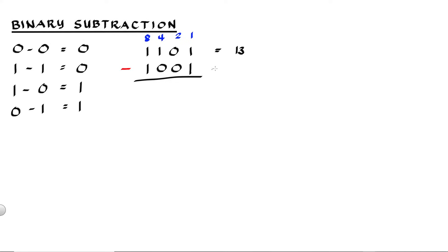1001 is the binary equivalent of 9 — we have 8 plus 1 is equal to 9. And 13 minus 9, we already know that the difference is 4 and we should come up with the same answer. 1 minus 1 is 0, 0 minus 0 is 0, 1 minus 0 is 1, and 1 minus 1 is 0. So 0100 is equivalent to 4 — we get the correct answer.